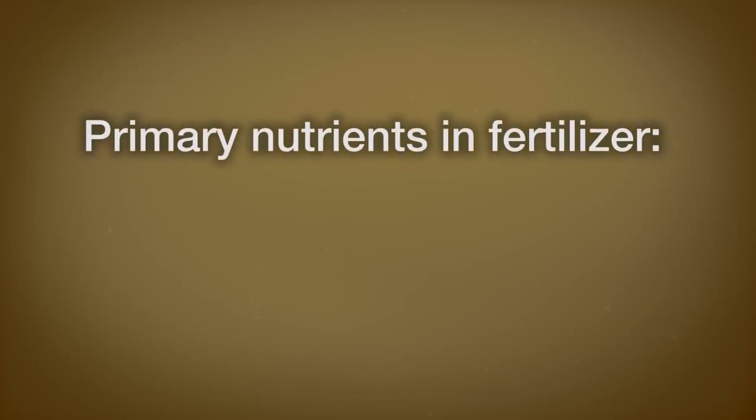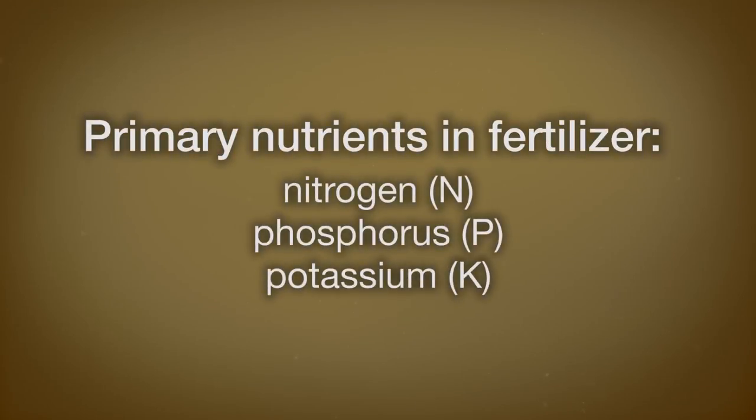Fertilizers contain essential nutrients for plant growth, primarily nitrogen, phosphorus, and potassium, often referred to as NPK. Two main types of fertilizer used in agriculture are organic and synthetic.